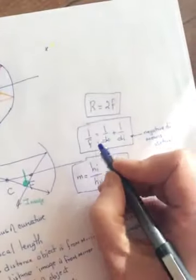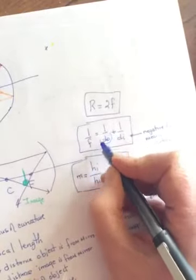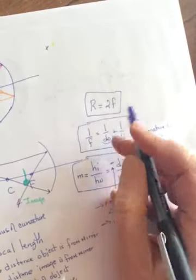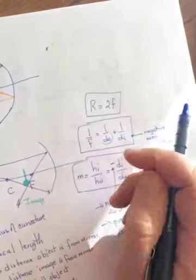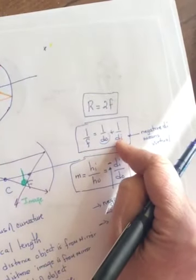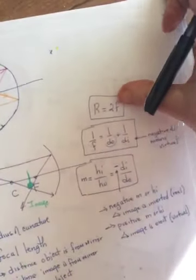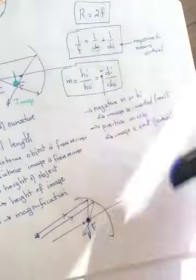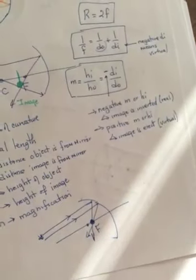Look at the equation and you can see why. If it's a distant object, this DO is going to be really, really, really, really, really big. Which means 1 over DO is going to be really, really, really, really, really small. Which means 1 over F will basically be equal to 1 over DI. In other words, DI will be equal to F. The image will format F for a distant object.